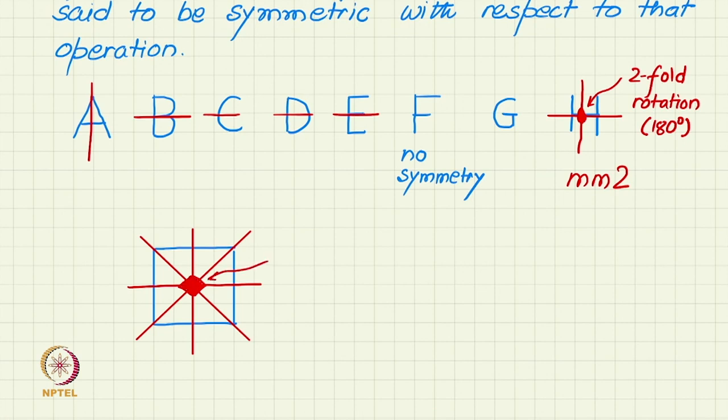That is called a 4-fold axis. We will discuss these in more detail. Here, just as an example and introduction, I am giving 4-fold axis, which means self-coincidence after 90 degree rotation.